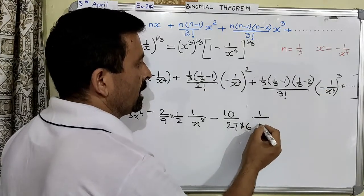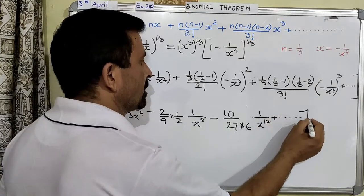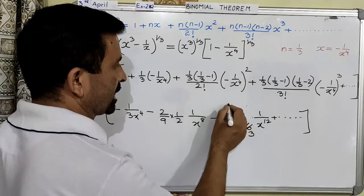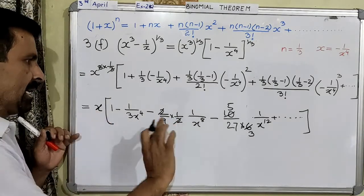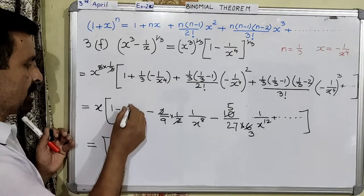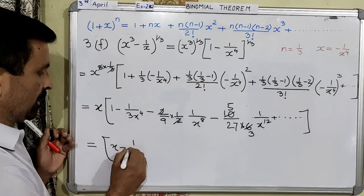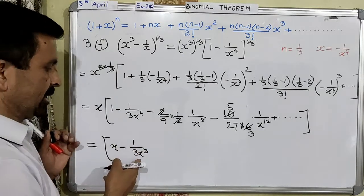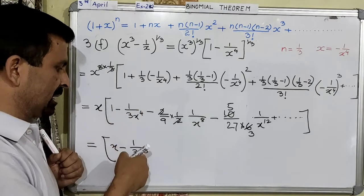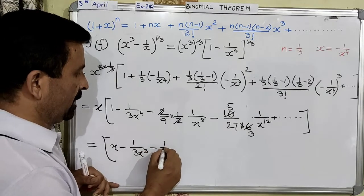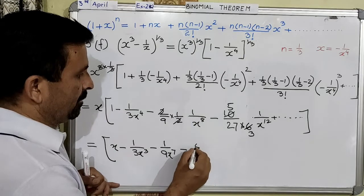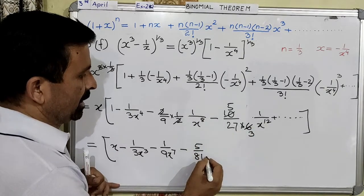Simplification continues: 3 times 2 is 6, and 2 times 5 is 10, and 2 and 2 cancel. Now just let us take this inside and write the final answer. When you multiply this x to the power 1 over 3 with x, it becomes x — now this will be x over 3x to the power 4, simplify, and then this will come as 1 over 3x cubed. Minus 1 over 9, x to the power 7 — because this x will be in the numerator, therefore after simplifying it will turn into this. Minus 5 over 81, and this will become x to the power 11.